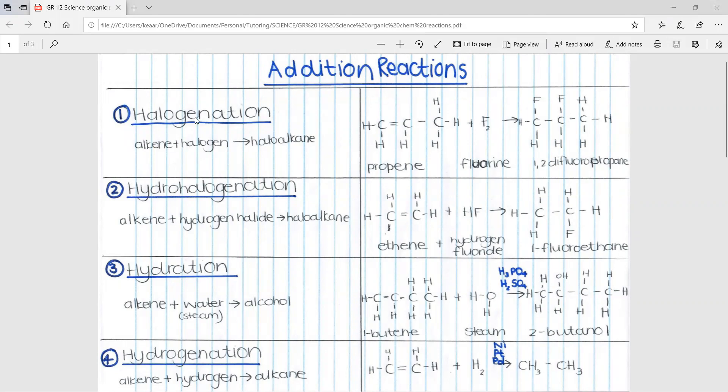The first addition reaction is halogenation. This is when you have an alkene, you add a halogen and this forms a haloalkane. Here is an example. If you have an alkene of propene, you have the double bond between the two carbons over here. You add a halogen, for example, fluorine and then this fluorine builds onto the carbons that had the double bond and there's no longer a double bond. This becomes 1,2-difluoropropane. It's important to know that this halogenation is a fast reaction.